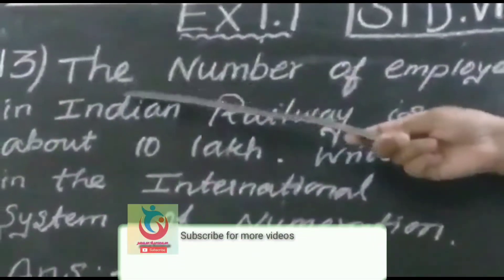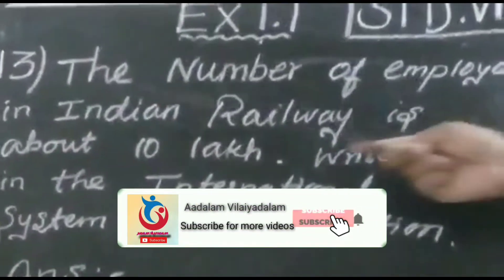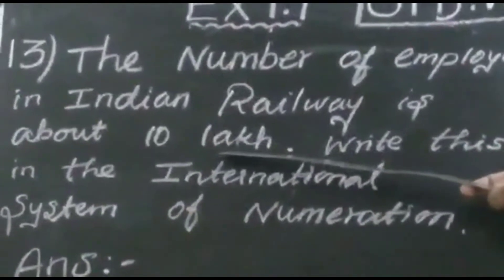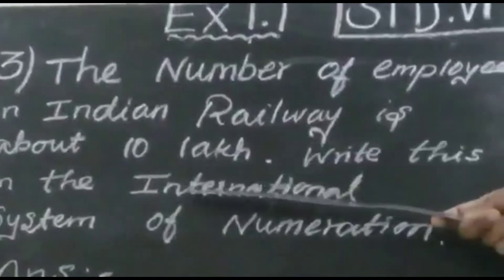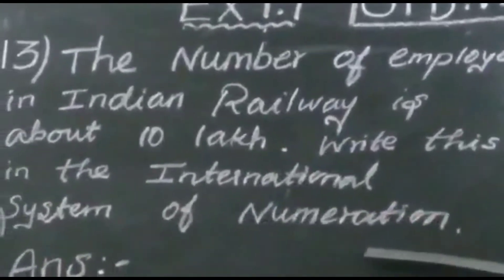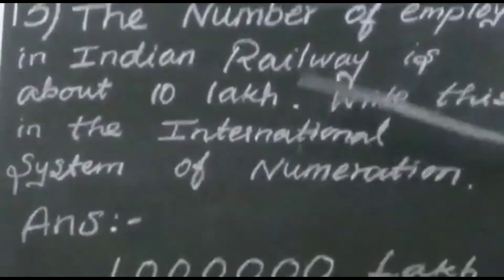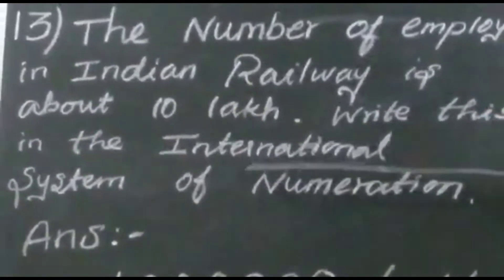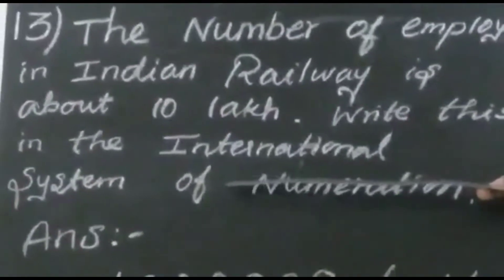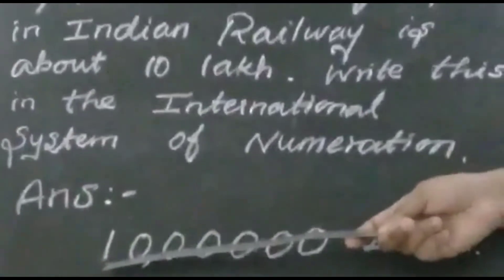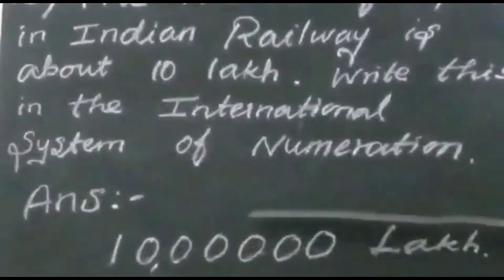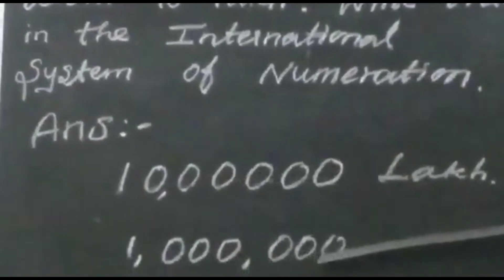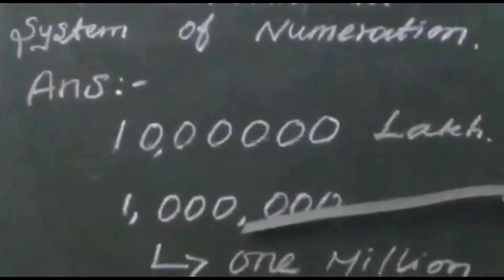Next question: the number of employees in Indian Railways is about 10 lakh. Write this in the international system of numeration. 10 lakh employees are given — you convert to the international number system. First write the number: 10 lakhs. In the international system, we insert a comma after every 3 digits.